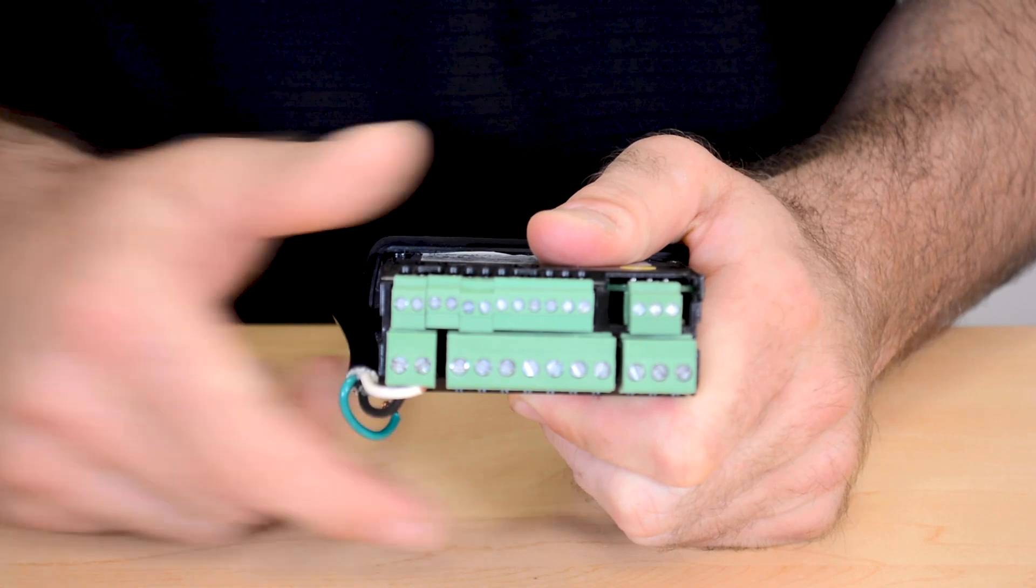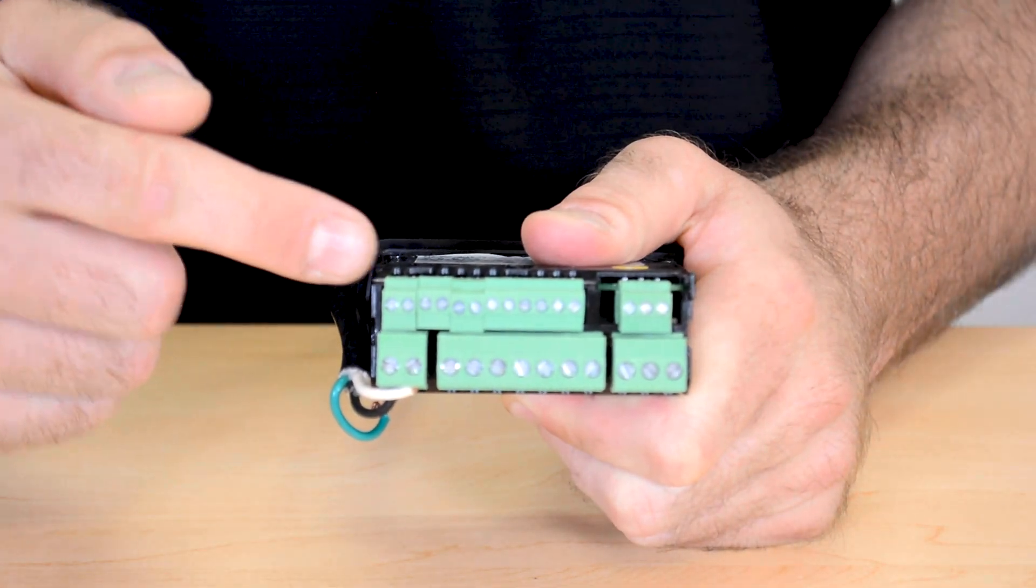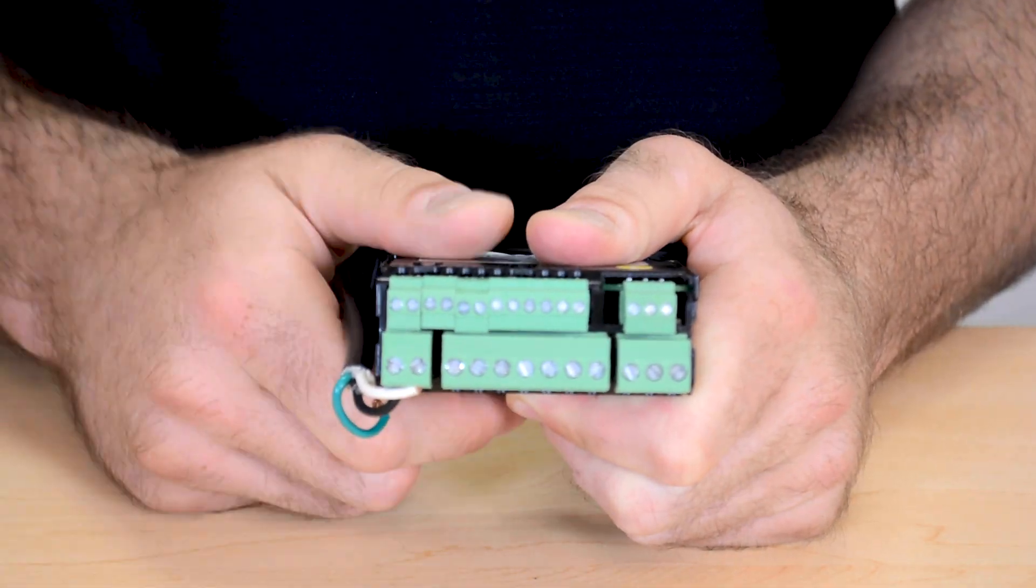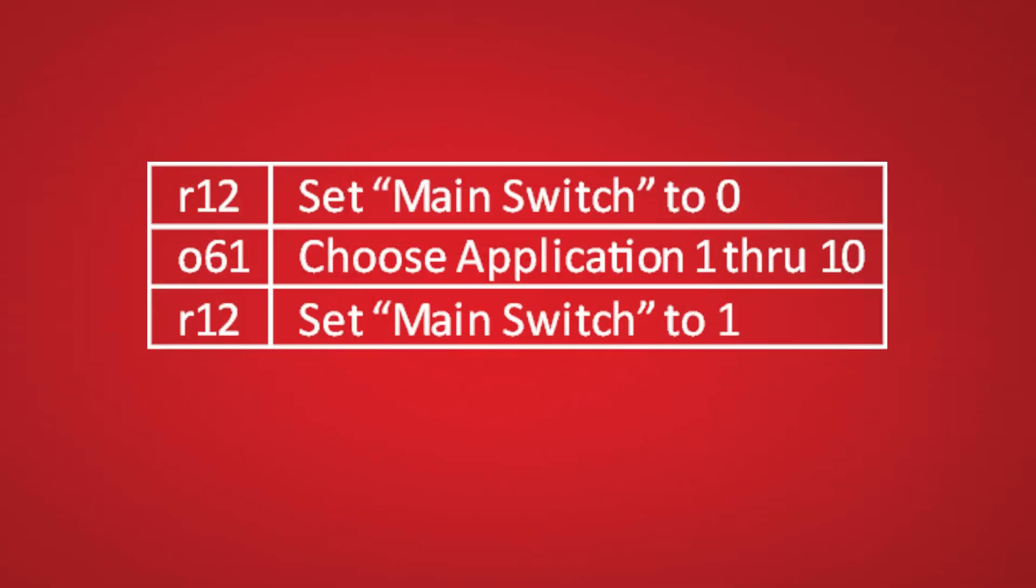On the back side of the 210 you can see the sensors will be wired on the top along with the communication card which we'll cover later and the relays will be covered on the bottom. To choose the relay application,